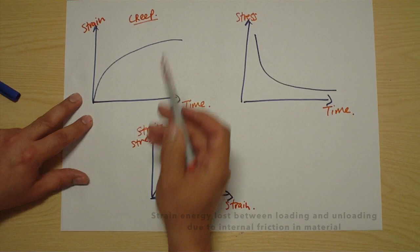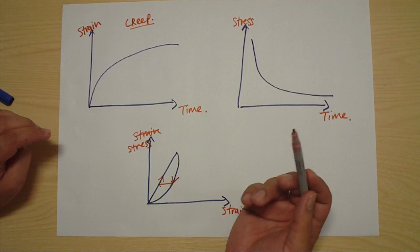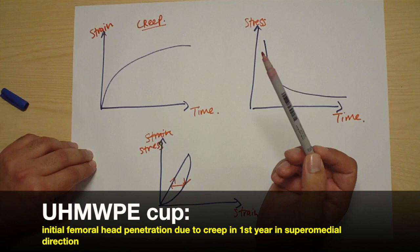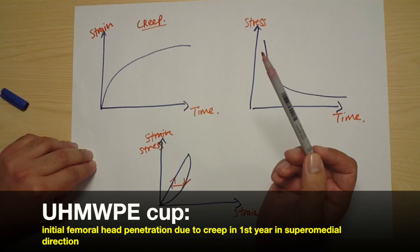Examples in orthopedics of creep can be all organic materials such as tendons, bone, and cartilage. An example of creep in clinical practice would be a newly implanted polyethylene cup for a total hip replacement. In the first 12 months, this undergoes creep and then enters a steady state, after which wear can be measured.